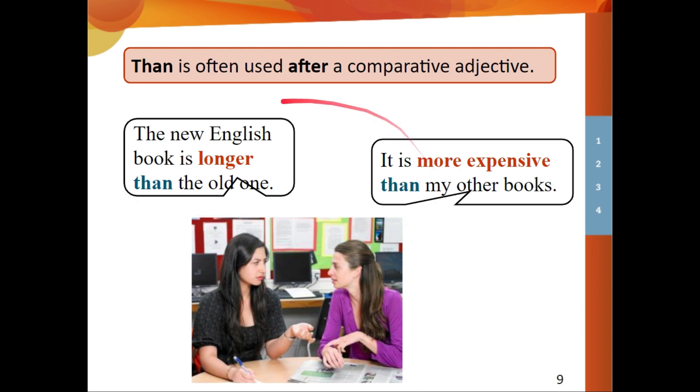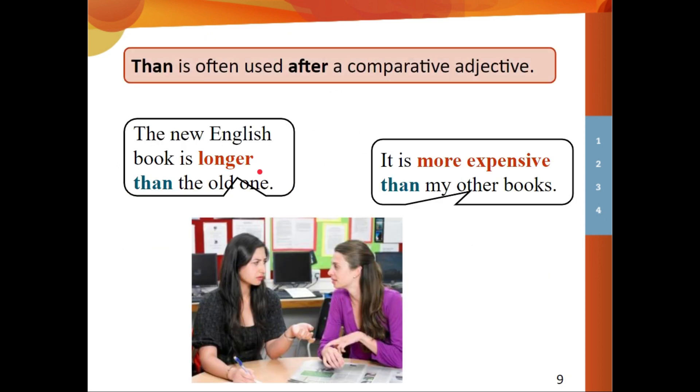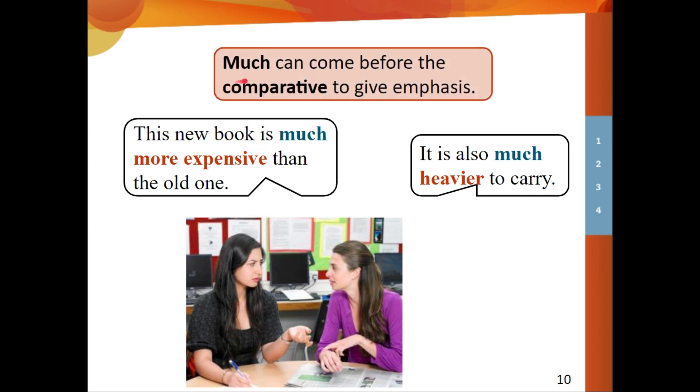Now look at these examples. The new English book is longer than the old one. It is more expensive than my other books. So look at how we use than after the comparative adjective. The new English book is longer, as we saw before. Longer with the ER and we say than the old one to make the comparison. Now we can also use much to give emphasis to this comparison. This new book is much more expensive than the old one. It is also much heavier to carry. So again, you can use much to add emphasis, to make that adjective stronger. And that's it for comparisons now.